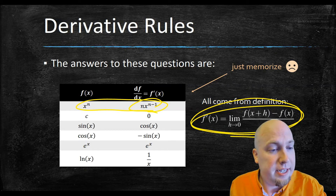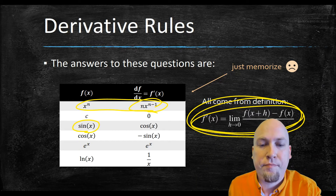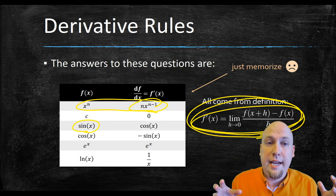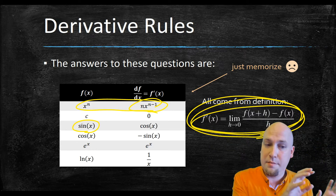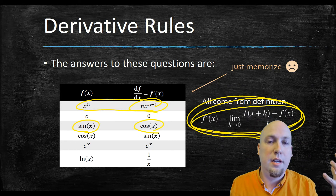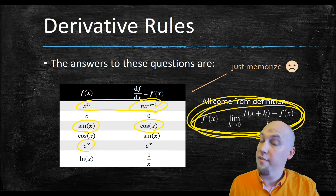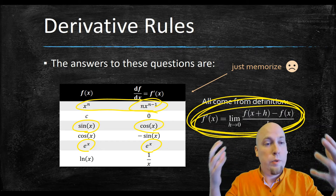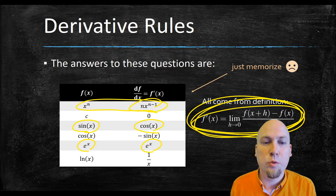You can do that exact same thing with all these other functions. For example, if you use the limit definition where f of x is sine of x, you can evaluate that limit — it's a bit more complicated, but at the end of the day you find the limit equals cos of x, so the derivative equals cos of x. Similarly, if you plug in f of x equals e to the power x, you find the derivative equals e to the power x. We're not going to reuse the limit definition over and over — it's too much work — so we'll just use these pre-made derivative rules.